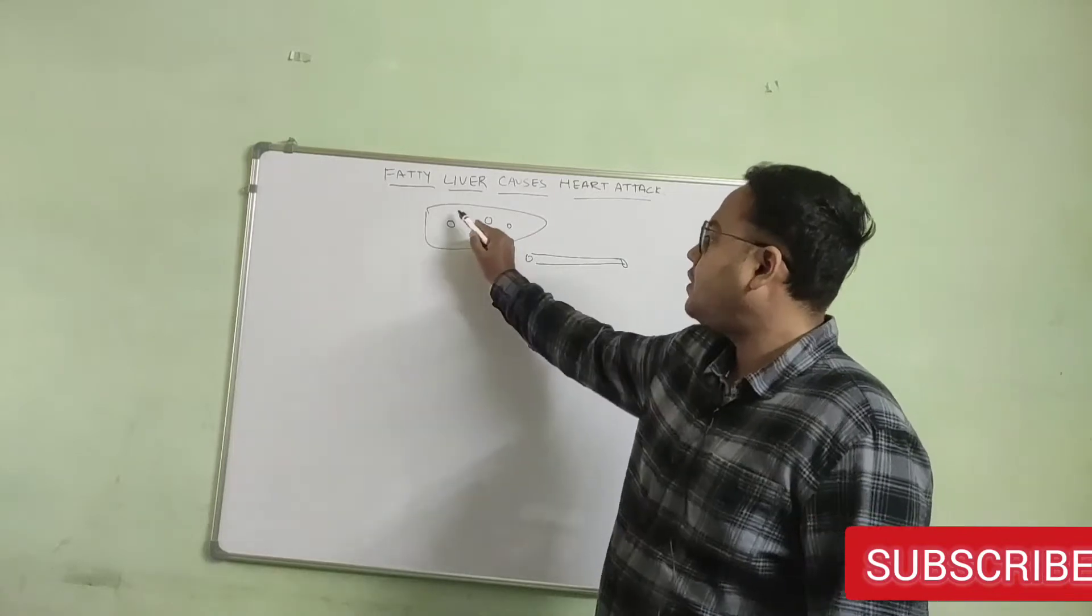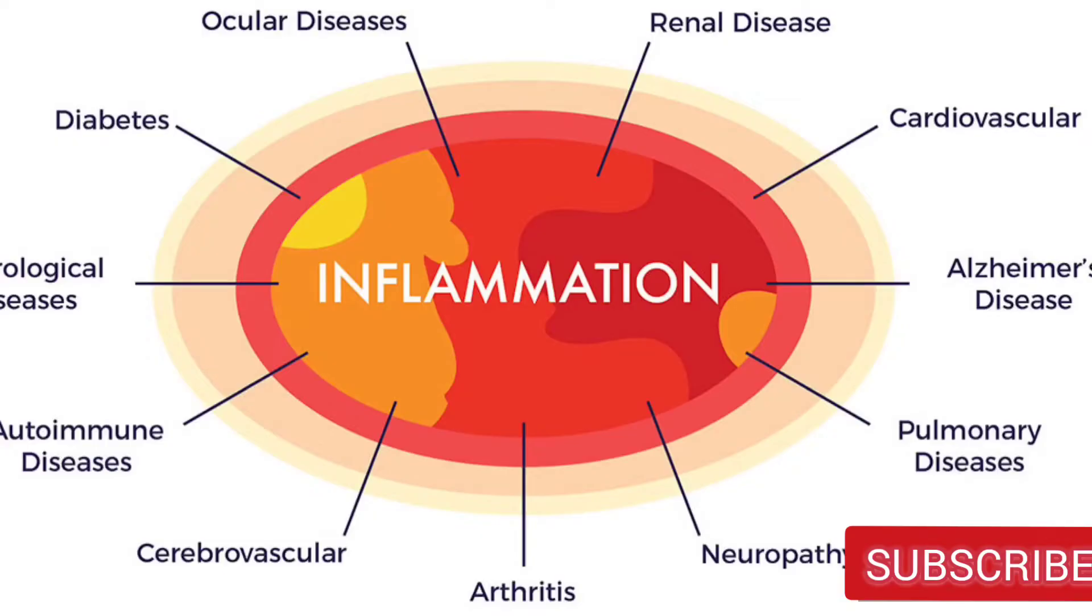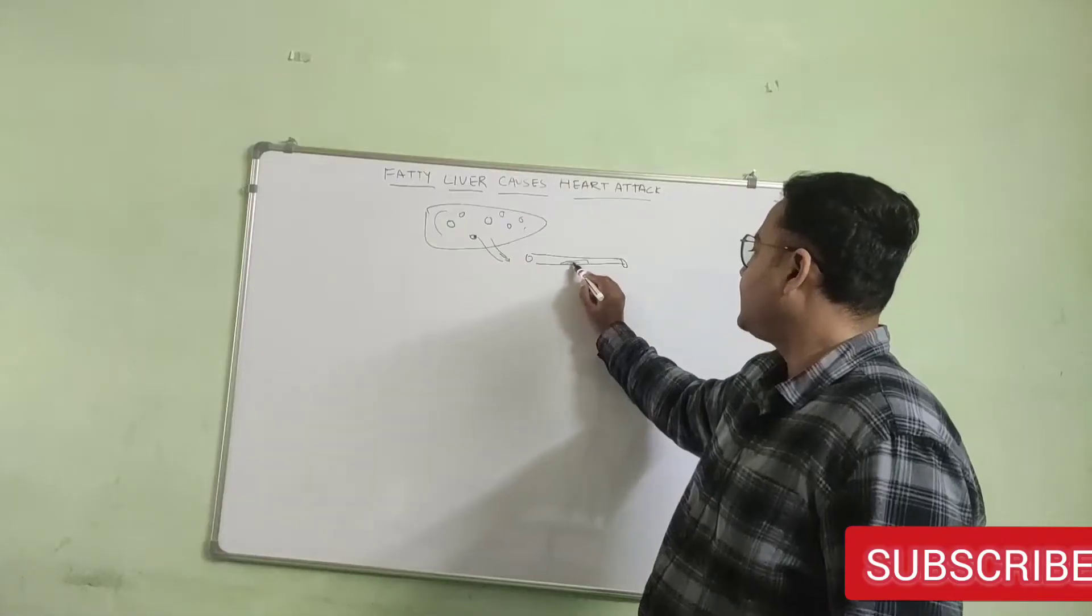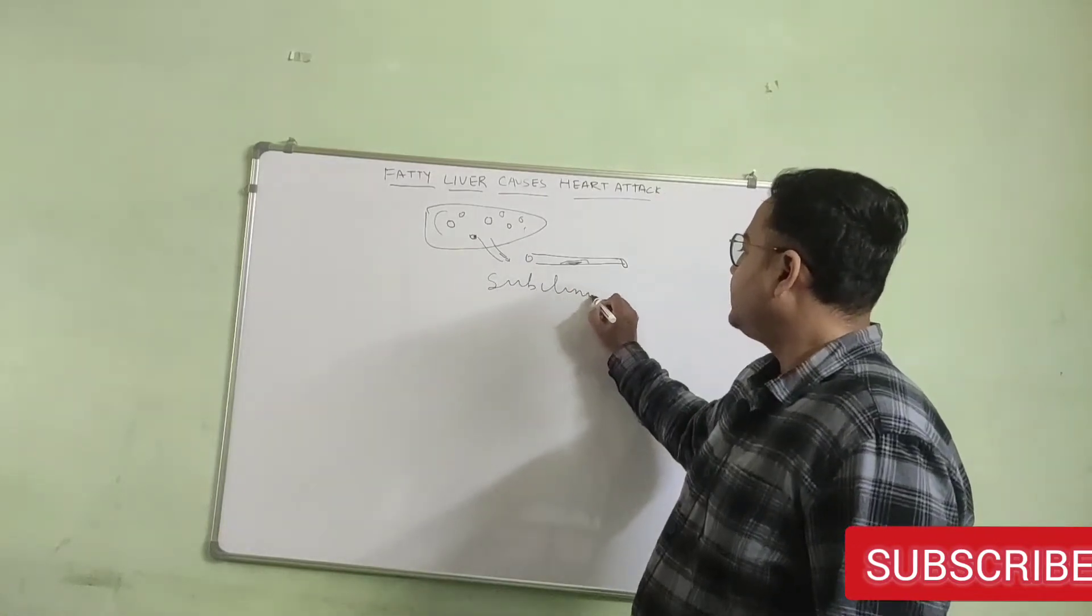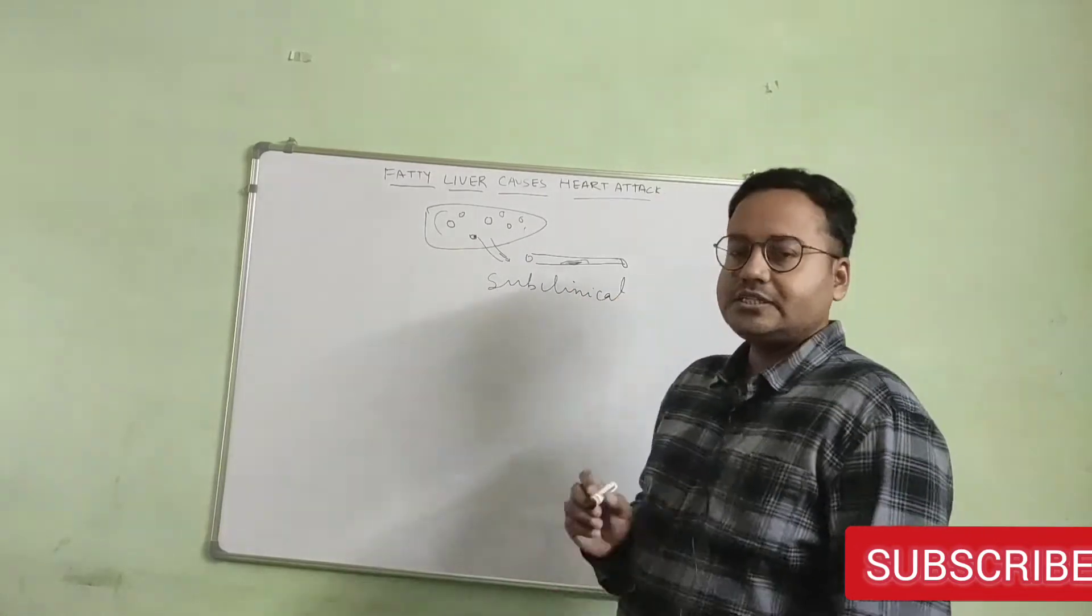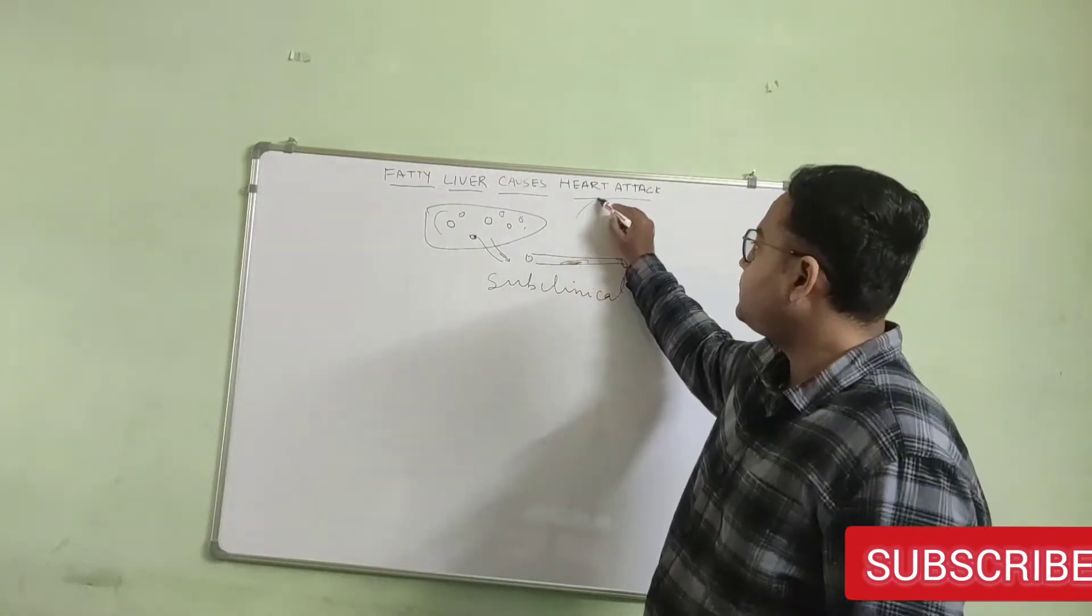So rather than causing inflammation of your hepatocytes, which are the healthy liver cells, this fatty liver will cause inflammation of your arteries. We call that sub-clinical or low-grade systemic inflammation. And that is the first step in the pathogenesis of heart attack.